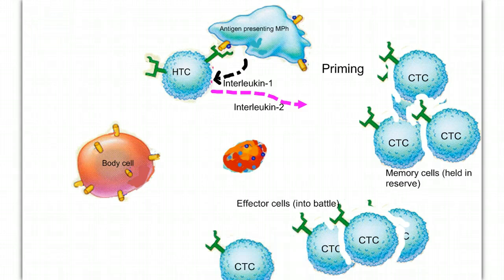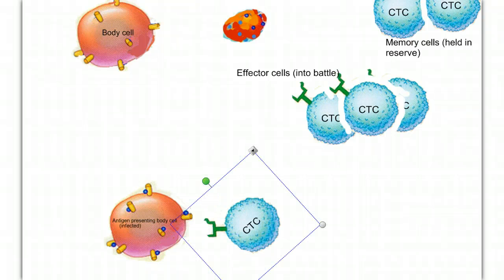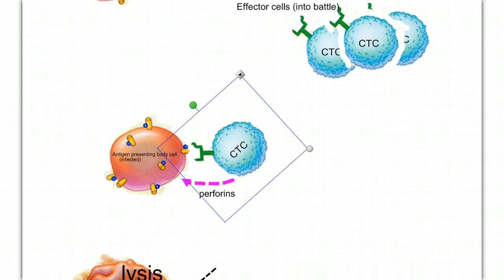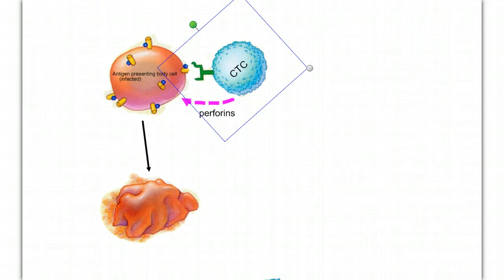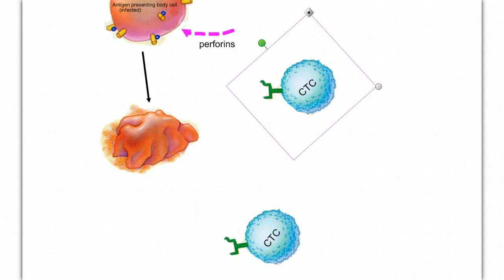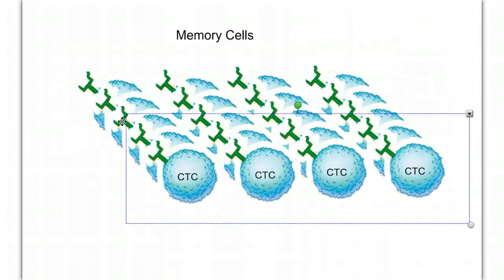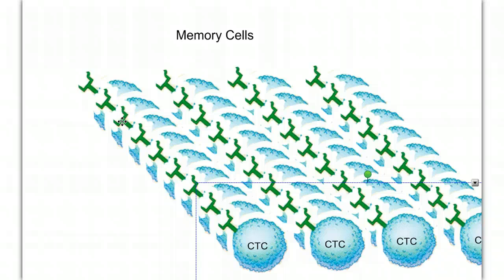The effector cells move out looking for infected body cells. When they come across one, they attach, recognizing the MHC-antigen complex of the antigen-presenting infected body cell, and secrete perforins, which leads to lysis — the destruction of that cell — reducing the spread of the pathogen throughout the body. After the battle is over, the level of effector cells drops. However, we retain some memory cells. This means that at a future time, if we're exposed to the same pathogen again, the response will be faster and greater, because we start from a small army of cells already in place. We can quickly create a much larger army and don't have to start from scratch. This increased efficiency confers immunity.